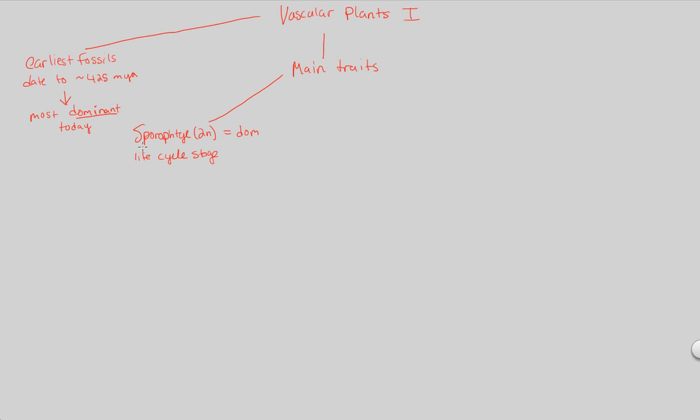And if we remember, plants undergo alternation of generations. They basically have this choice of sporophyte versus gametophyte depending on the environment. Right now, I'm telling you that vascular plants have made the other choice as compared to their bryophyte ancestors. And that is sporophyte. They are diploid as the dominant life cycle stage. And we'll see why in just a second.